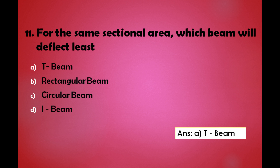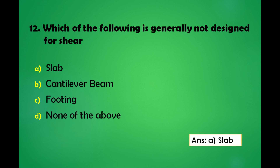For the same sectional area, which beam will deflect the least? A) T beam, B) Rectangular beam, C) Circular beam, D) I beam. The answer is: for the same sectional area, the beam which will deflect the least is the T beam.